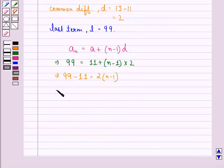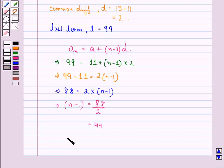This implies 88 is equal to 2 into (n-1), and this further implies that (n-1) is equal to 88 divided by 2, that is equal to 44. Therefore, n will be equal to 44 plus 1, that is equal to 45.